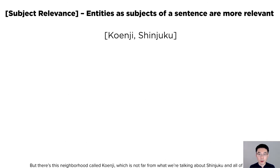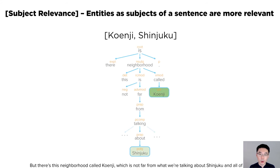CrossCast infers the relevance of an entity to the subject using the grammatical structure of a sentence, where the root of the tree corresponds to the main verb in the sentence. The closer a word is to the root, the more directly it is related to the main verb and the more relevant to the subject of the sentence.